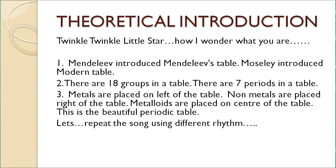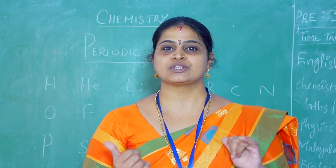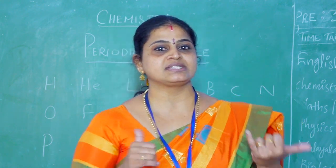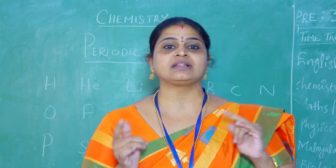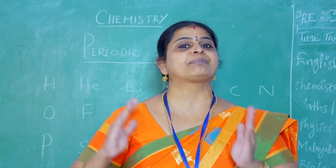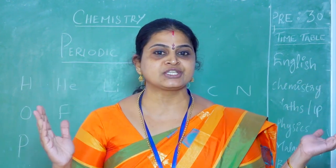There are 18 groups in the periodic table. There are 7 periods in the periodic table. Metals are placed on the left of the periodic table, and non-metals are placed on the right of the periodic table. Metalloids are placed in the centre of the table. This is the beautiful periodic table.